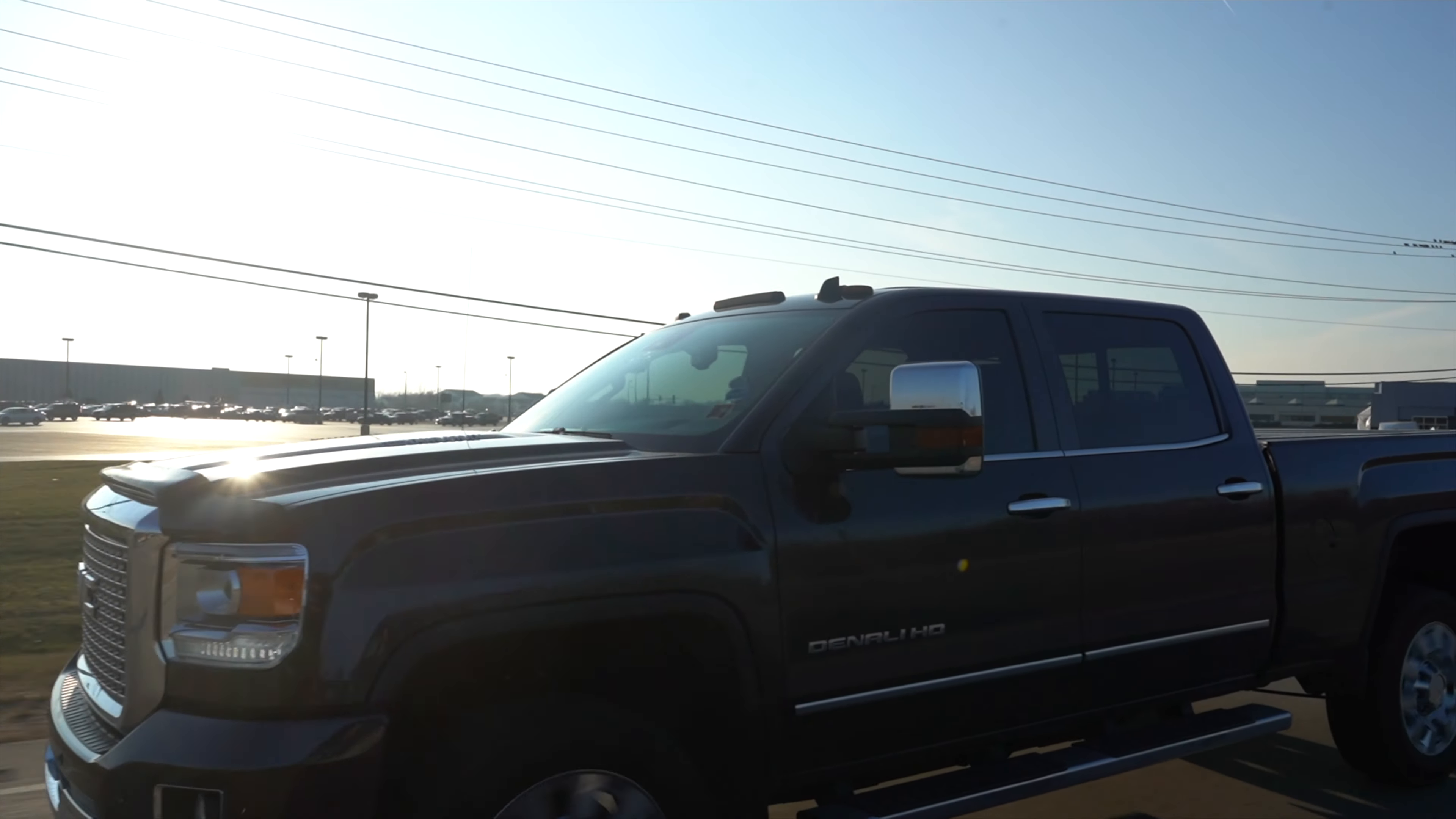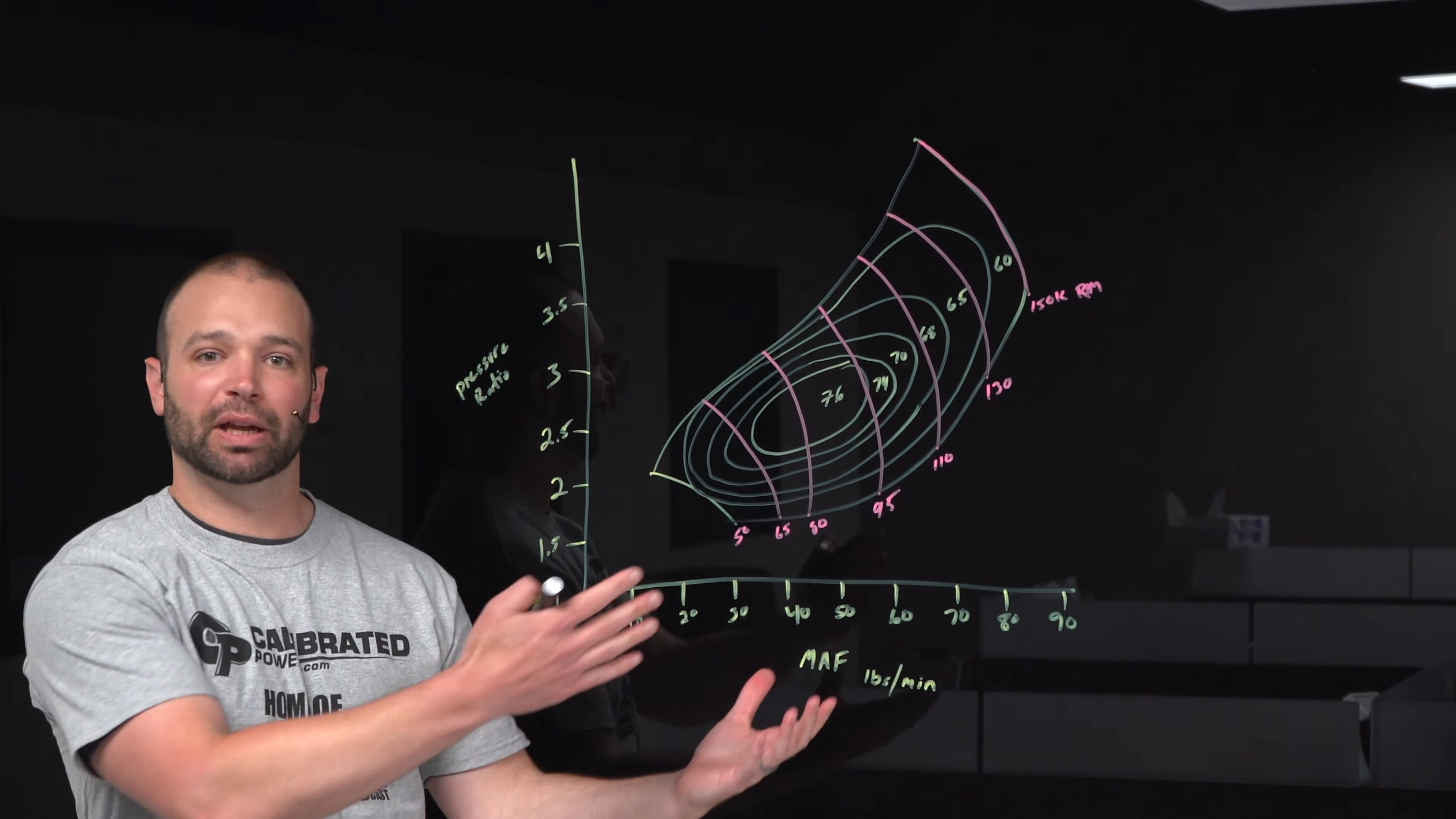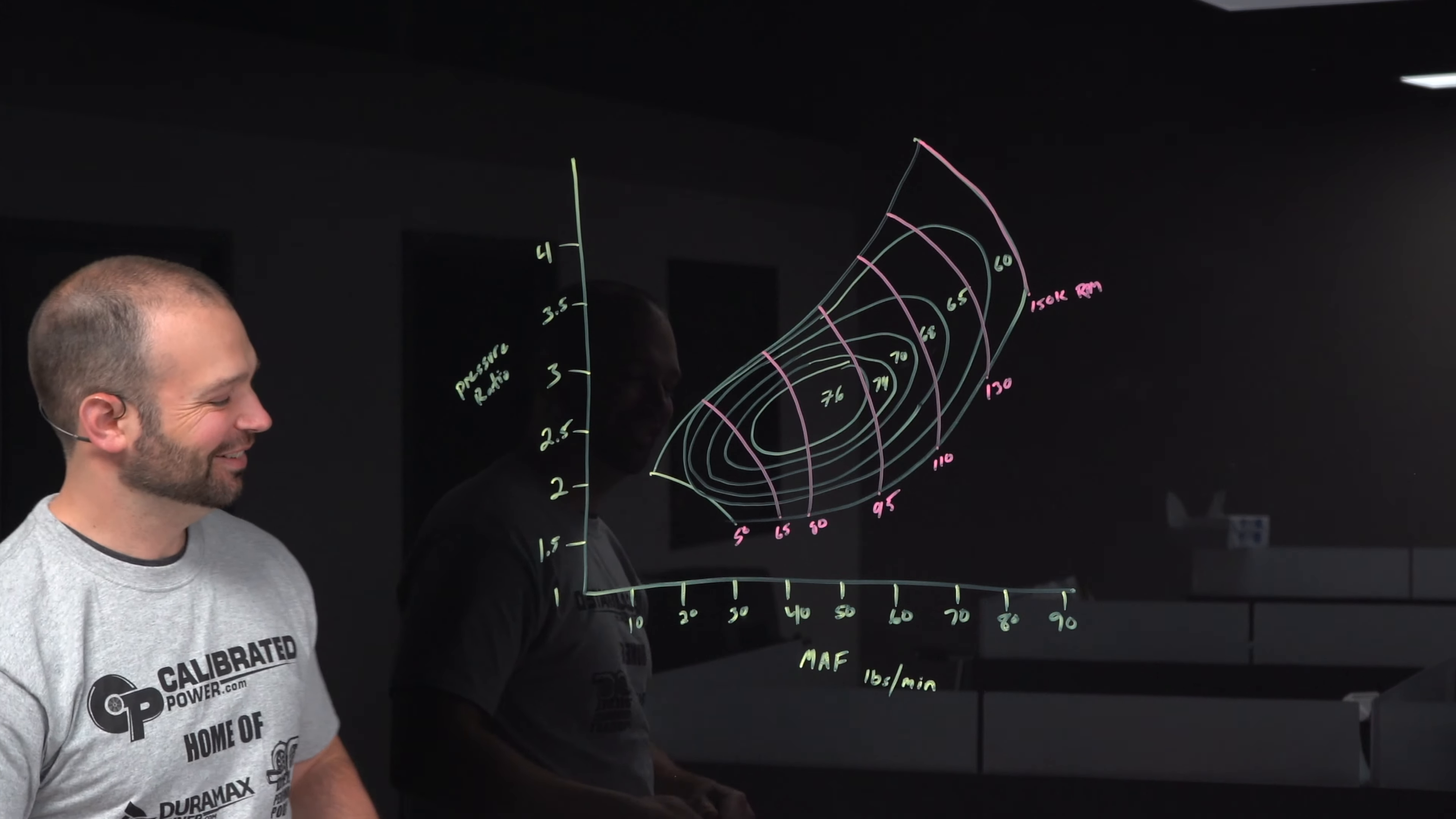So now that you know what these shaft speed numbers represent, let's talk about some common sensors that are on these diesel trucks that help the truck understand where it's at on this map, which by the way, this map lives in the ECU. The truck knows it exists. Think about that.